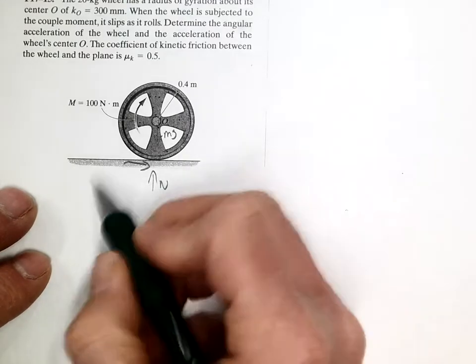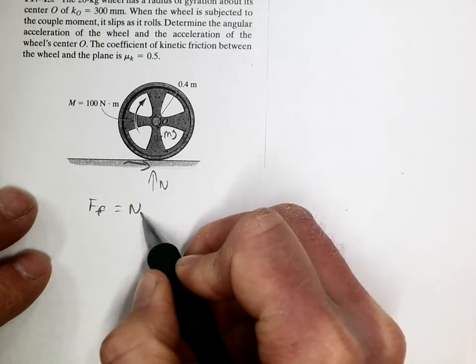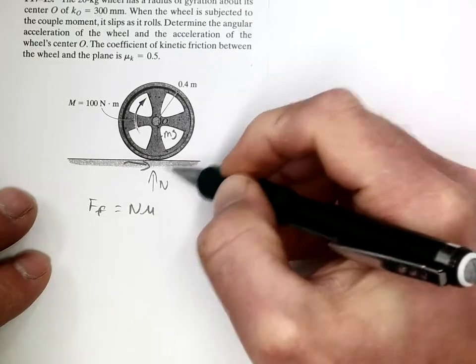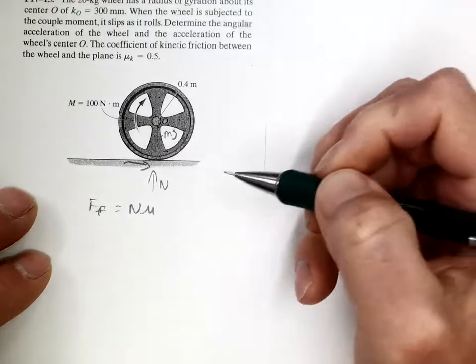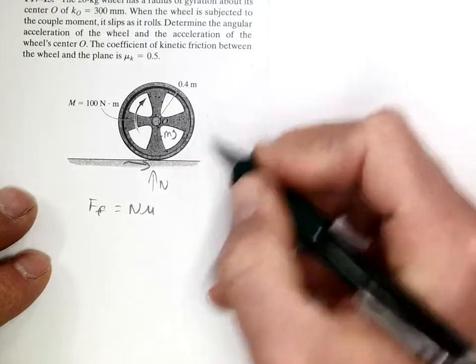So the force of friction is equal to the normal force times mu. In this case, since the normal force and mg are the only things in the vertical direction, the normal will clearly equal mg.